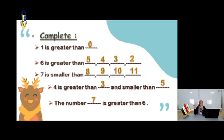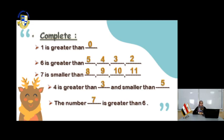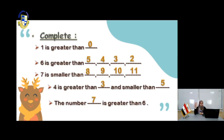7 is smaller than what? 7 can be smaller than 8, 9, 10, and 11. 7 cannot be smaller than 2. You cannot write 2 or 3. It has to be numbers greater than 7. 4 is greater than 3, and at the same time, 4 is smaller than 5.